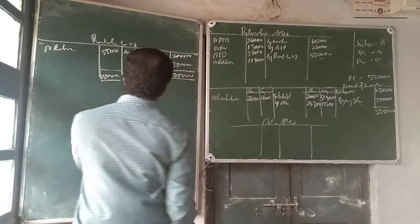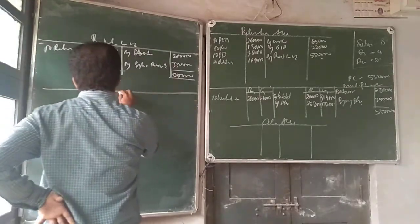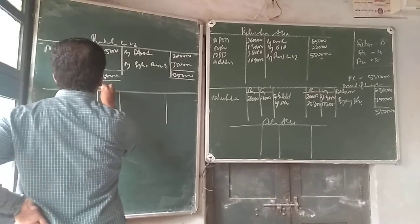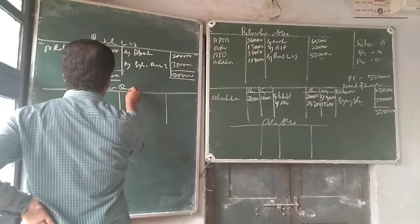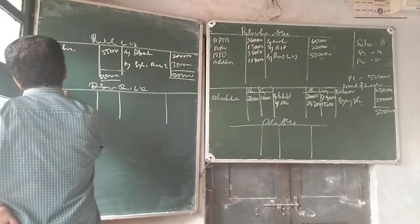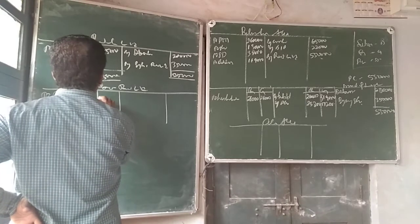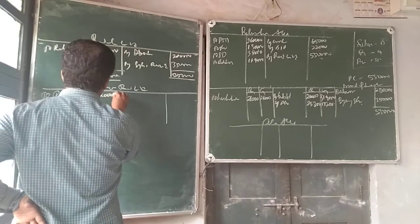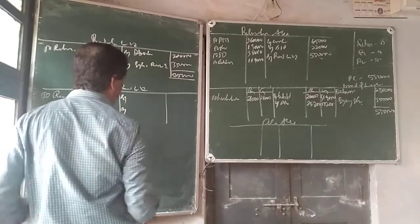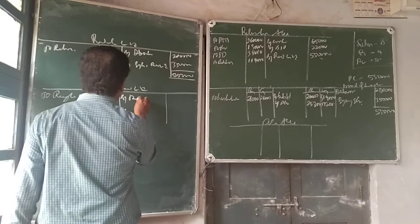Now we are supposed to prepare two more accounts: one for debentures in Raghah Limited. 2 lakh, 2 lakh, 2 lakh — totaling 5 lakhs.